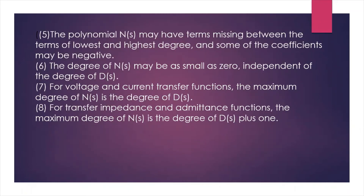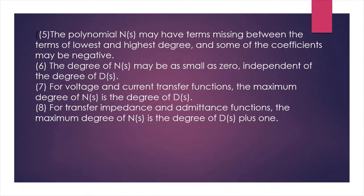The fifth point states that the numerator polynomial can have any missing terms between the highest and lowest degree, and some of the coefficients can be negative. This was not allowed for driving point functions. Additionally, the degree of N(s) can be as small as 0 and is independent of the degree of D(s) — we can even have s⁰ as the degree of N(s).